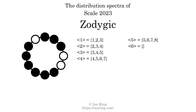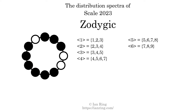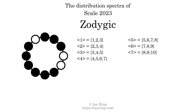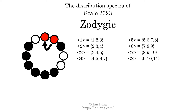The generic interval of six scale steps comes in three different specific interval sizes: seven semitones, eight semitones, and nine semitones. The spectrum width is two. The generic interval of seven scale steps comes in three different specific interval sizes: eight semitones, nine semitones, and ten semitones. The spectrum width is two. The generic interval of eight scale steps comes in three different specific interval sizes: nine semitones, ten semitones, and eleven semitones. The spectrum width is two.